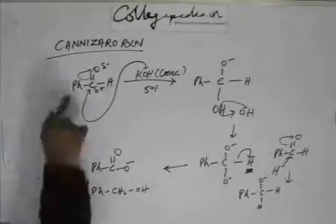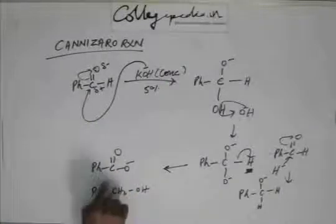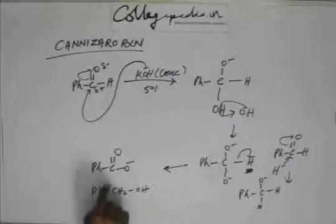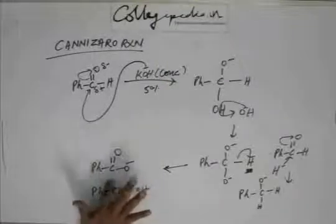Now as you can see, this was the aldehyde. One of the product that you are getting is a acid. So this is oxidation. From benzaldehyde you are getting benzoic acid. After protonation of course, you will get benzoic acid. So this part is oxidation.